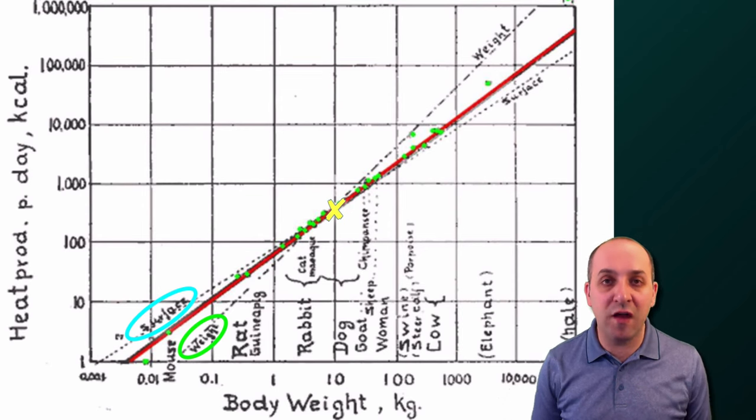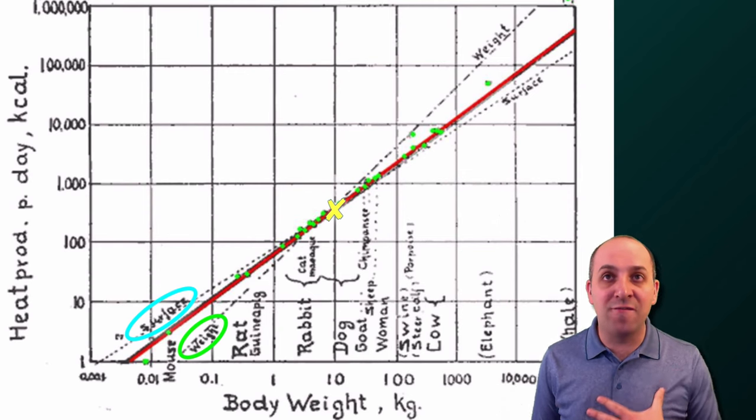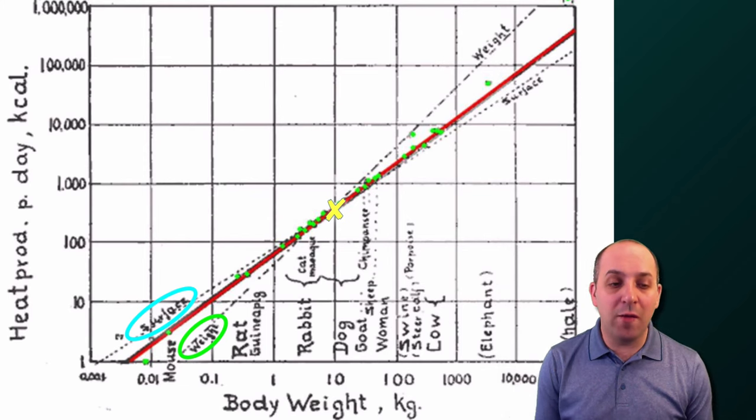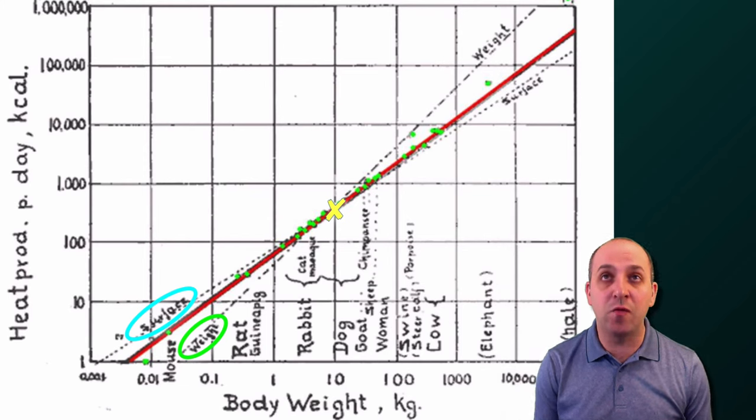Just like the surface area of cells affects the efficiency with which those cells exchange materials with their environment, the surface area of animals affects the rate with which animals exchange heat with theirs. Smaller animals are going to exchange heat at a much faster rate. The consequence being that smaller endotherms, like our hummingbird from the beginning, have to eat constantly.